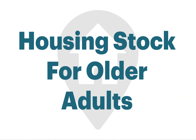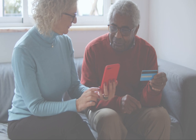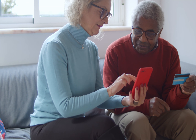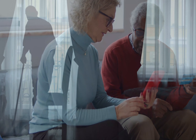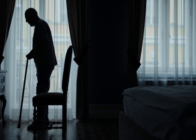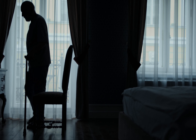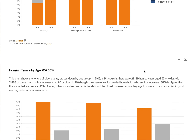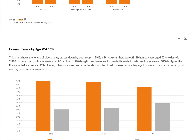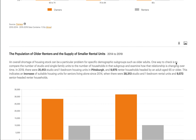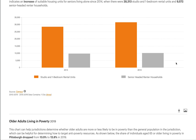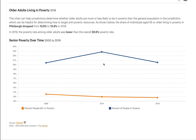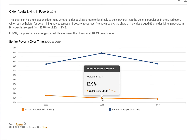Finally, the housing stock for older adults section addresses the fact that senior households often face higher rates of specific housing challenges, including affordability due to limited or fixed income and accessibility due to mobility limitations. When analyzing a region's housing profile, it is critical to analyze the specific housing needs for seniors. This section includes five interactive visualizations to help you understand the housing needs of older adults.